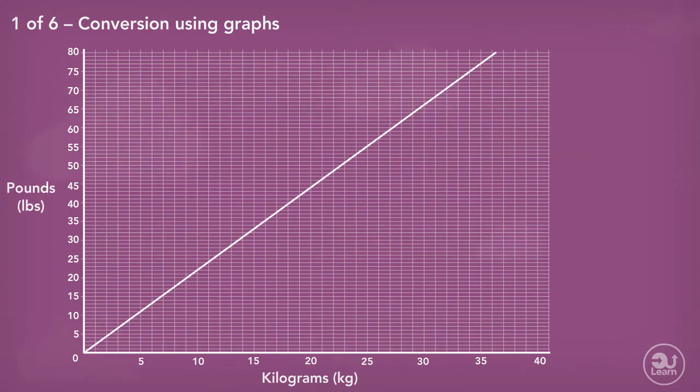The straight line shows the relationship between the two units and can be used to convert between them. Let's say we wanted to convert 35 kilograms to pounds. We would go to where 35 kilograms is on the kilogram axis,